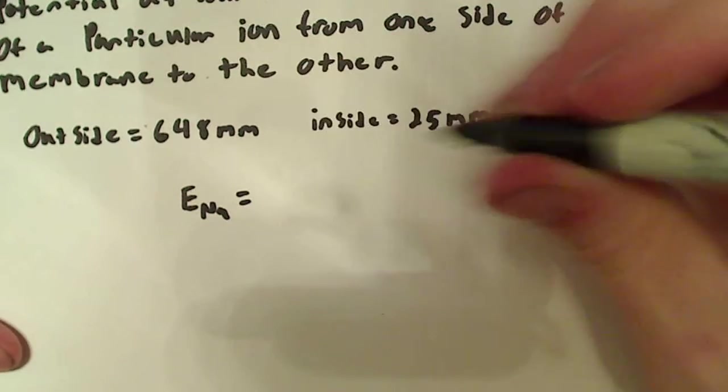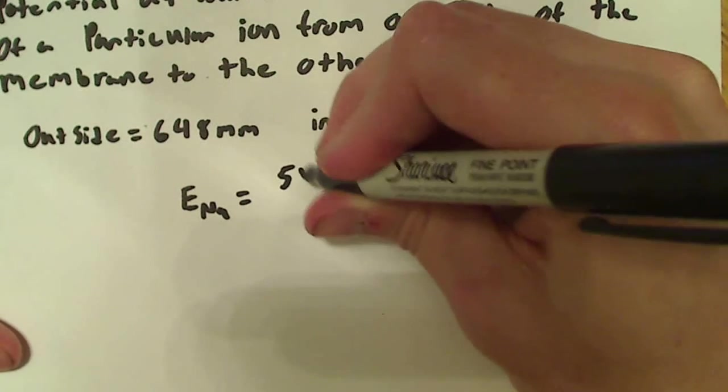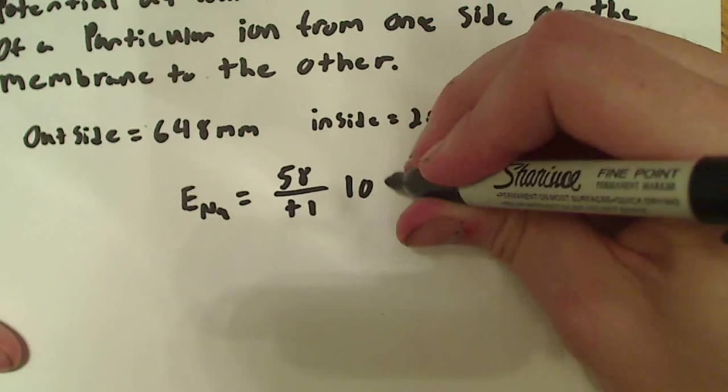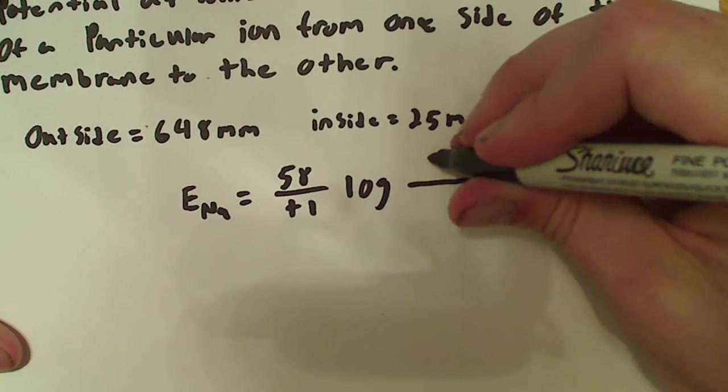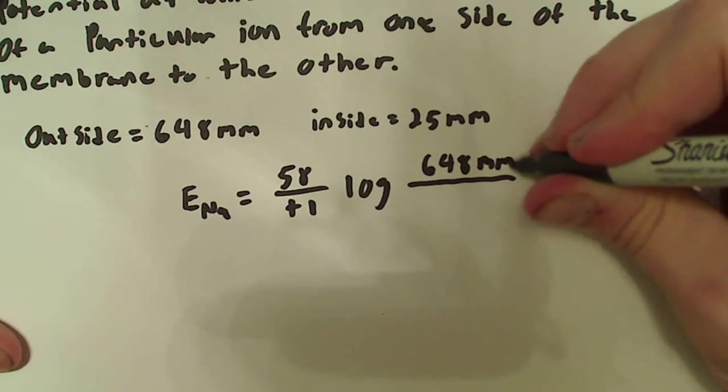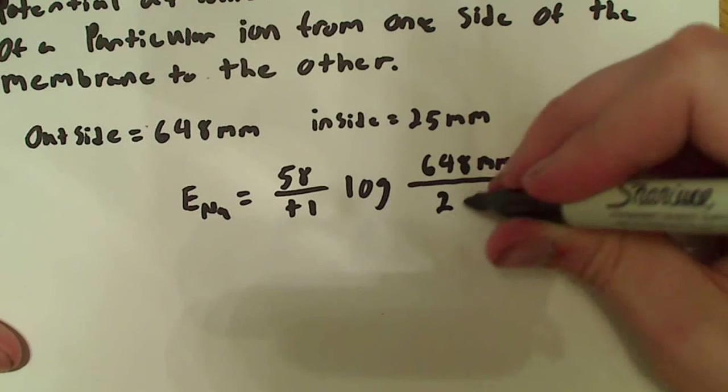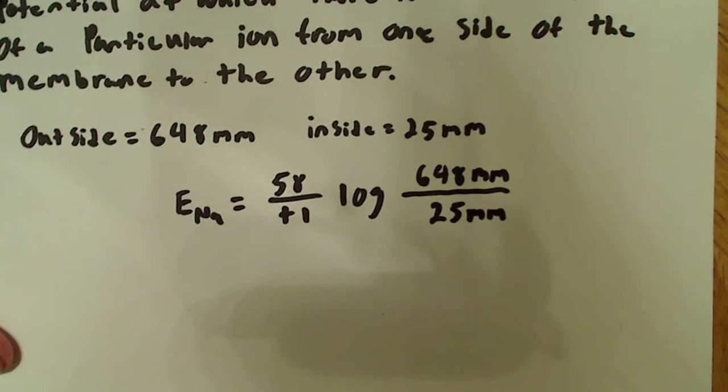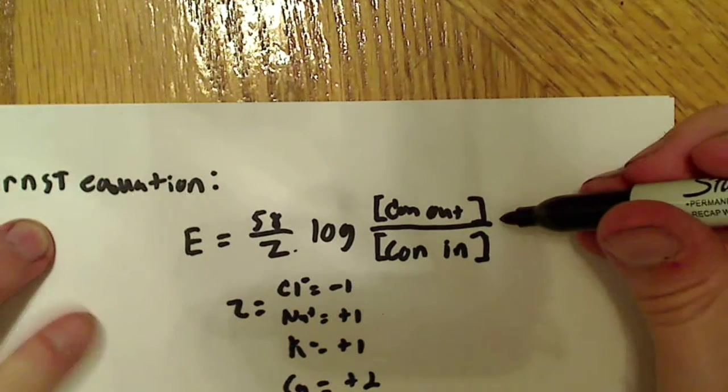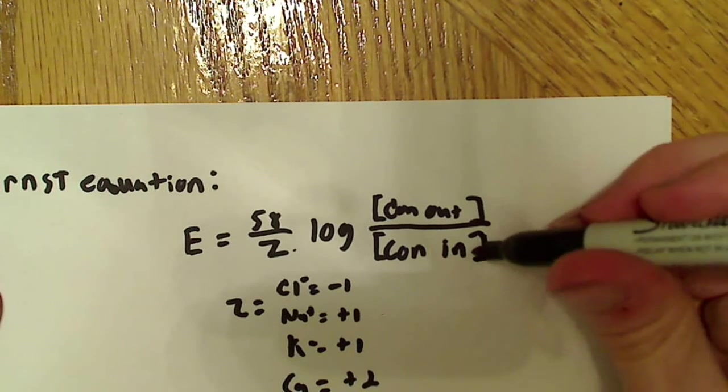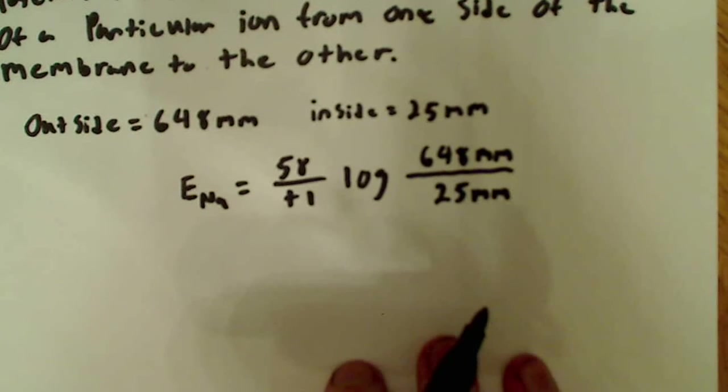So, E for Na is equal to 58 over plus 1, and times the log of, well, the concentration over here is 648 millimoles outside and 25 millimoles inside. Okay. So, remember why I did that? Because it's the concentration of the ion outside the semipermeable membrane over the concentration inside the semipermeable membrane. So, that's why this is set up the way that it is.